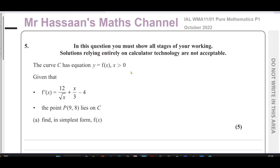Welcome back, this is Mr. Hassan's Maths channel. I'm now going to answer question number 5 from the October 2022 international A-level Edexcel Pure Mathematics P1 paper. We are told about a curve with equation y equals f(x) where x is greater than zero. We're given that f'(x), the first derivative or gradient function, equals 12 over root x plus x over 3 minus 4. We're also told there's a point P with coordinates (9, 8) that lies on the curve, and we have to find the equation of that curve.